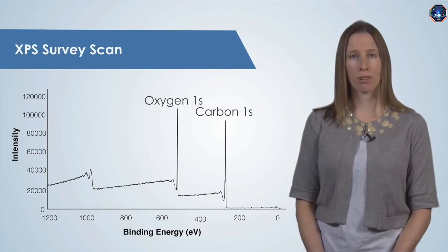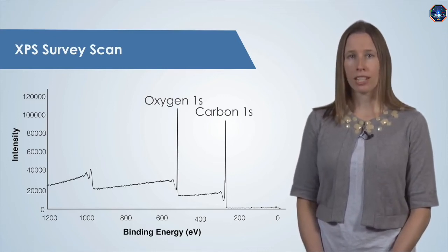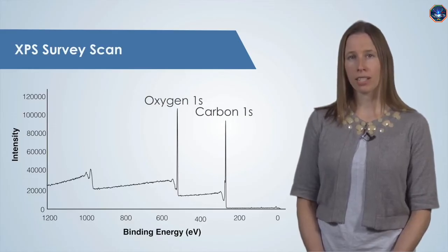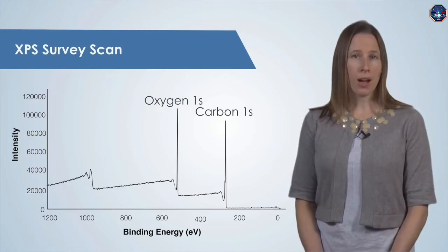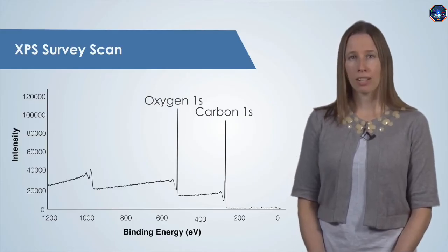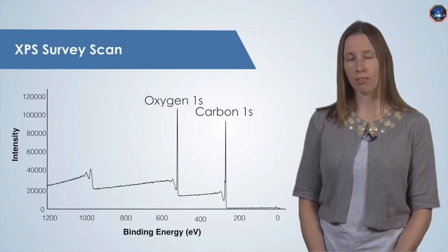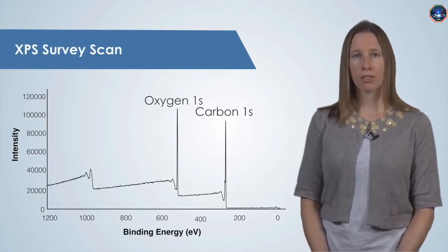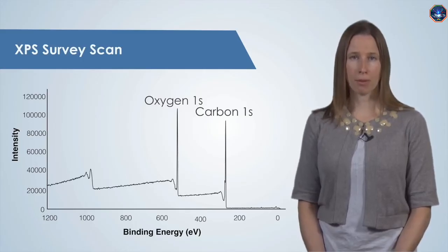Along the X-axis is the electron binding energy, which is a measure of how tightly the electron is bound to the atom it's attached to. The binding energy tells you what element the electron was attached to, that is, carbon or oxygen. On the Y-axis is the intensity, or the number of electrons emitted. The peak positions for various elements are well known, and we can interpret the spectrum to identify the elements present on the surface of the sample.